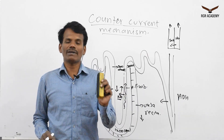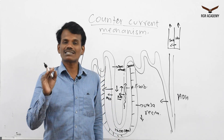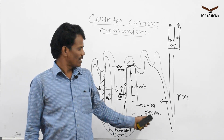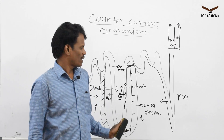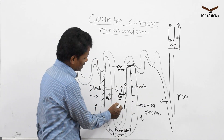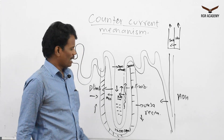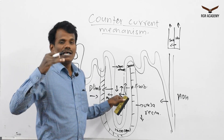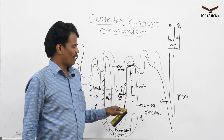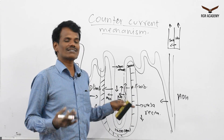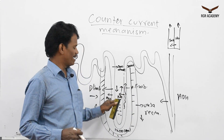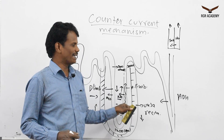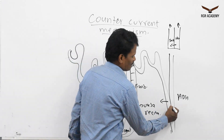This is the way the counter current mechanism is very much helpful for the concentration of urine. If more salts are present in the interstitial region, water will come out — indicating the body is in a low water condition. If more water is required by the body, more salts will be in the interstitium, and water coming into the interstitium concentrates the urine.